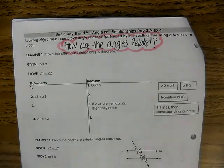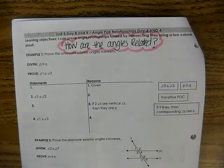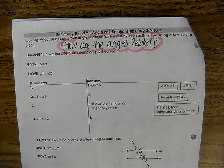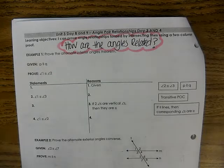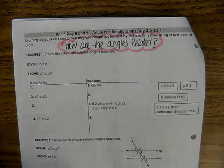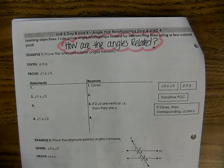How are the angles related? Are they vertical angles? Are they a linear pair? Corresponding? Alternate interior? Alternate exterior? Always ask yourself: how are the angles related?